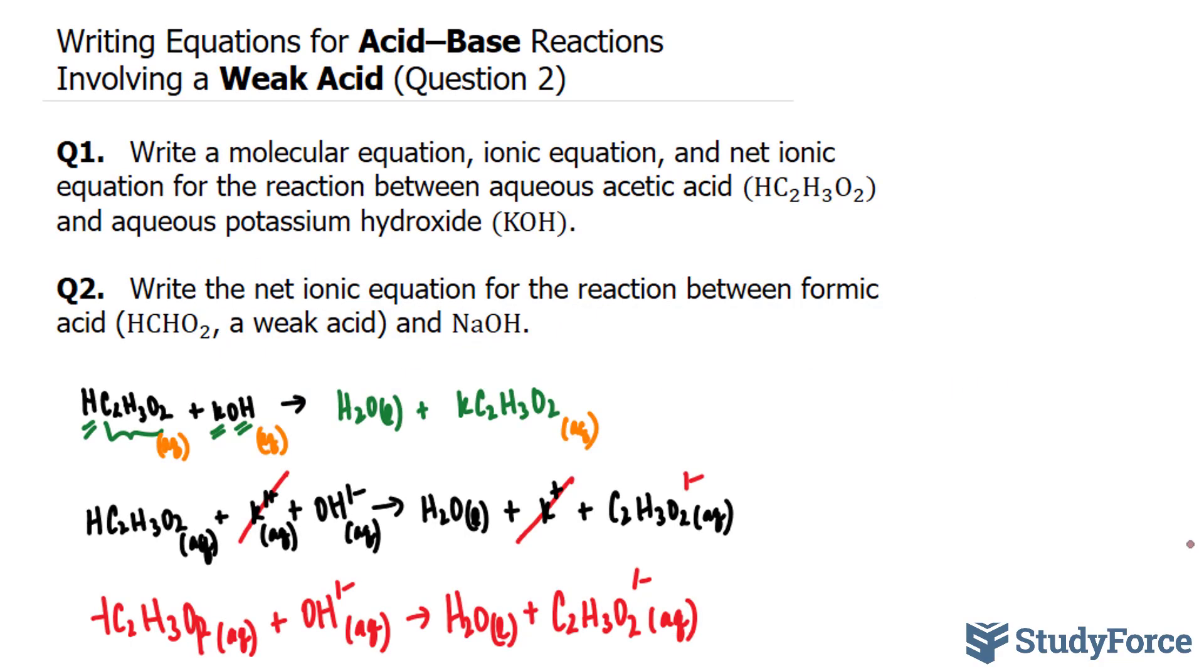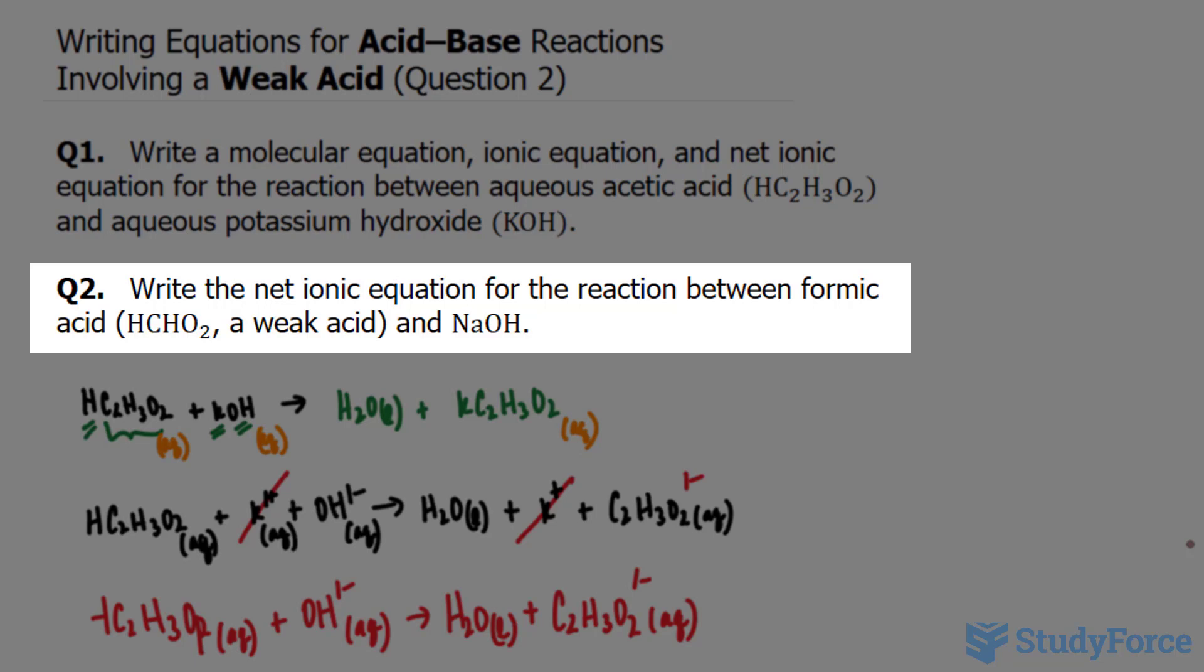In question 2 of this series, where we learn how to write equations for acid-base reactions involving weak acids, we're asked to write the net ionic equation for the reaction between formic acid, which has the chemical formula HCHO2, and sodium hydroxide.